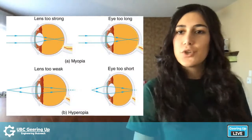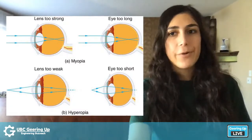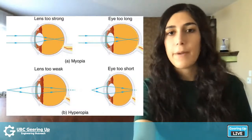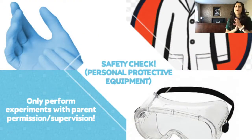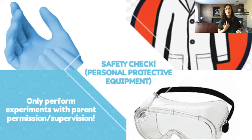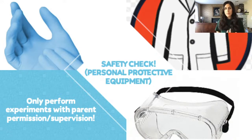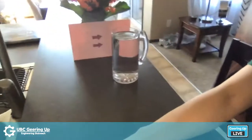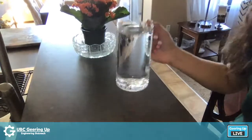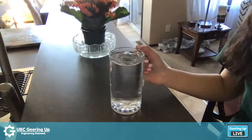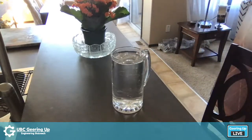That takes us right into today's demo. Before the demo, a safety check: today's demo is very safe. Nothing hazardous, not super messy — you don't need to put your hair up, goggles, or a coat. Just make sure you perform these experiments with parental permission and supervision, as always. For today's demo you're going to need a straw, a glass, and just a cup of water. You've probably actually seen this before — it's pretty common.